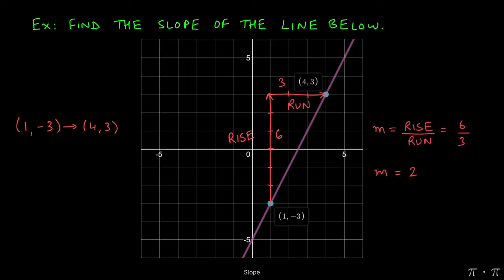This gives us the slope as 6 over 3, the rise over the run, which simplifies or reduces to 2.